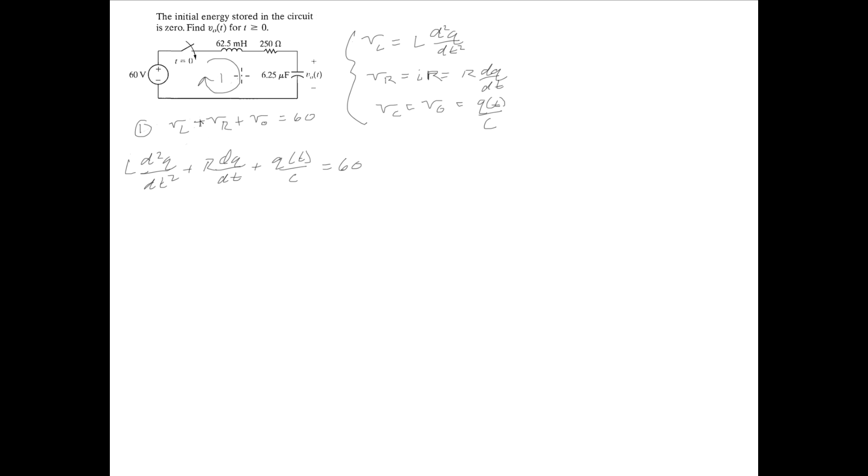We already have all the values for L, R, and C right here. Making the substitutions for L, R, and C, this equation now becomes 62.5 millihenries, so that's times 10^-3 d²Q/dt² plus R, which is 250 ohms, dQ/dt,